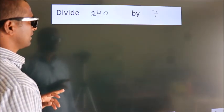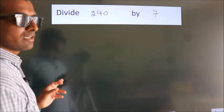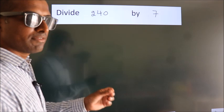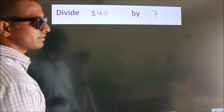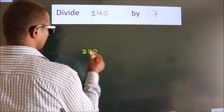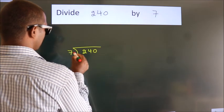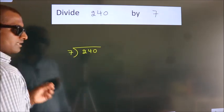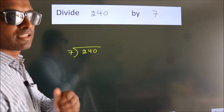Divide 240 by 7. To do this division, we should frame it in this way. 240 here, 7 here. This is your step 1. Next.